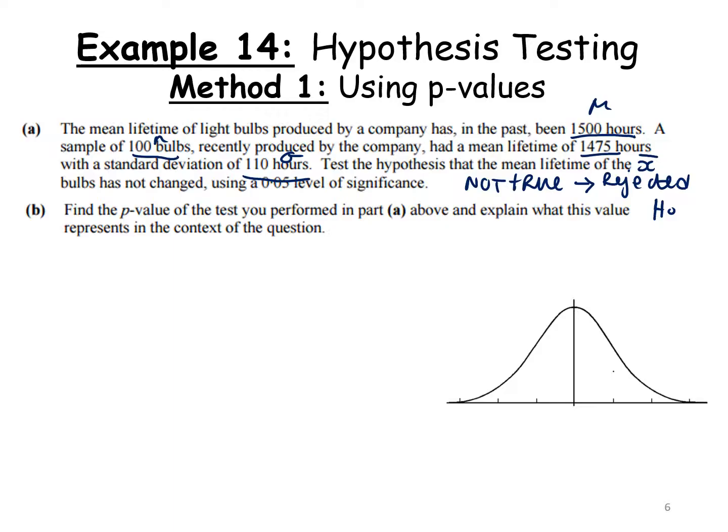Find the p-value of the test you performed in part A and explain what this value represents in context of the question. First, I'm going to figure out my z-score.